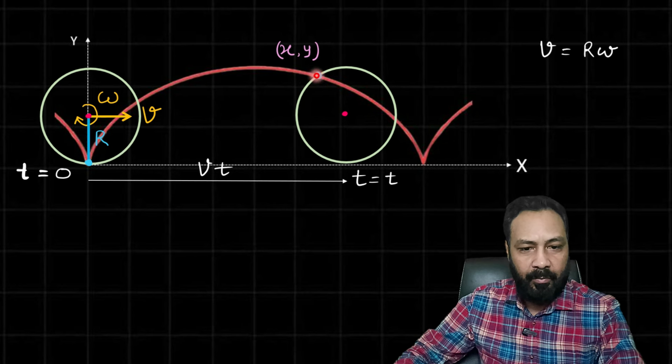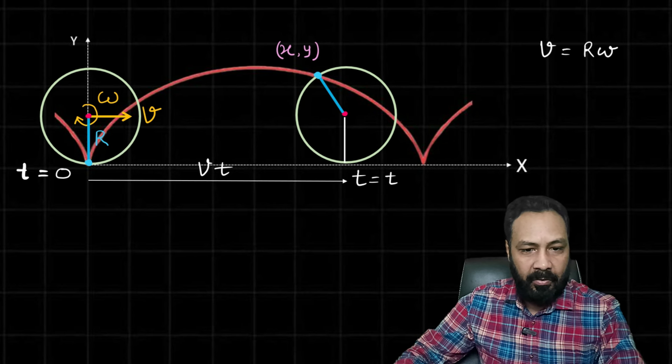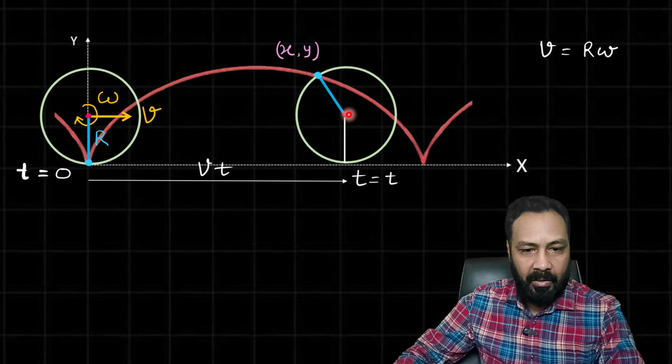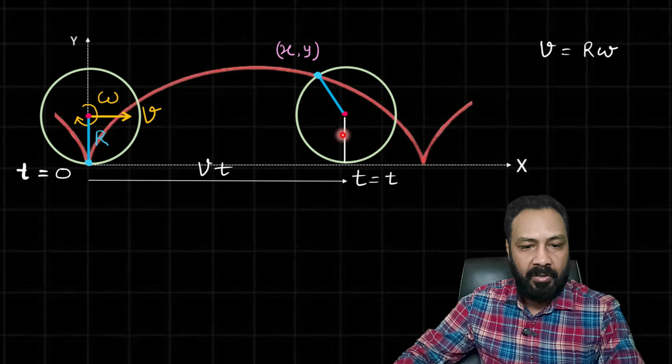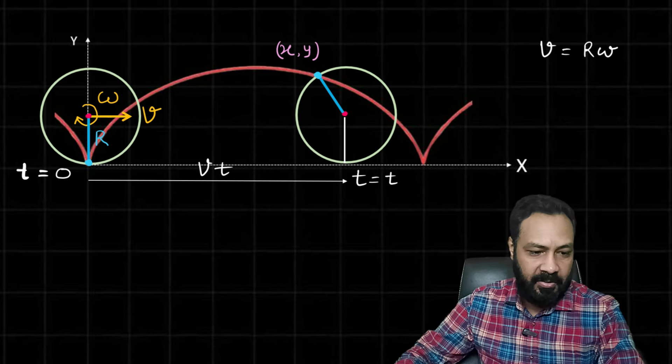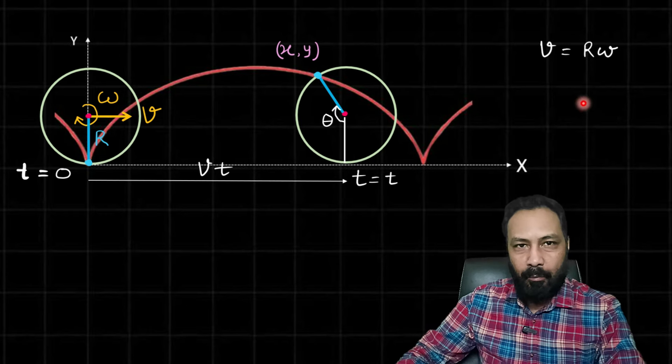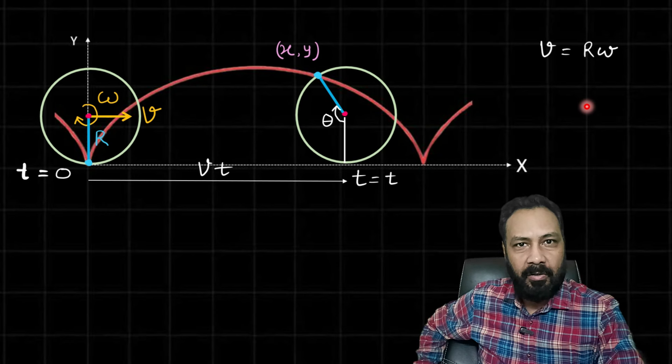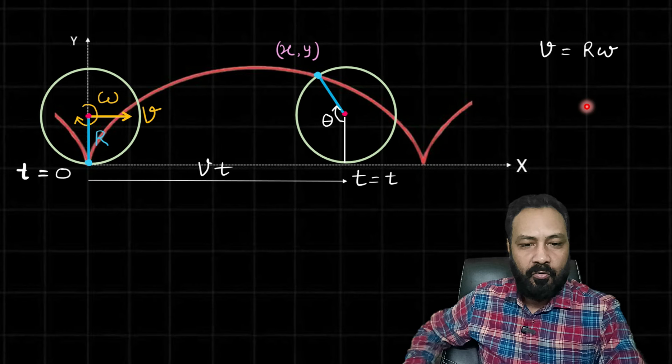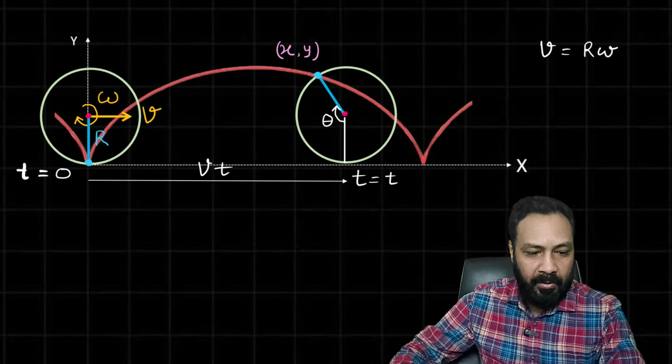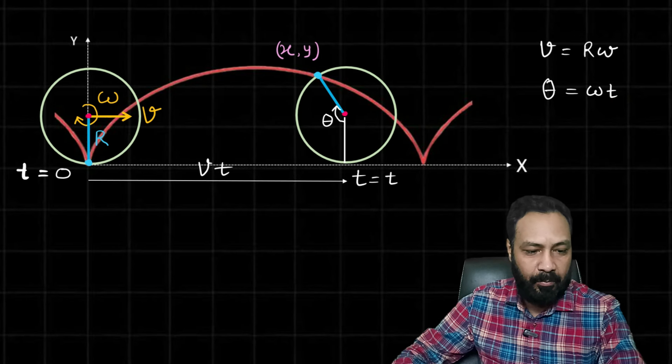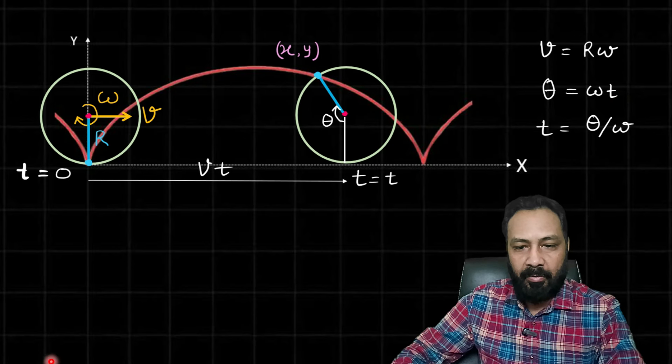And so this line has also rotated by some angle. In time t, initially it was here and with respect to initial position it has rotated by some angle say theta. Because it is rolling with constant angular velocity omega, in time t the angle rotated by this line is theta = omega*t, so t can be written as theta/omega.